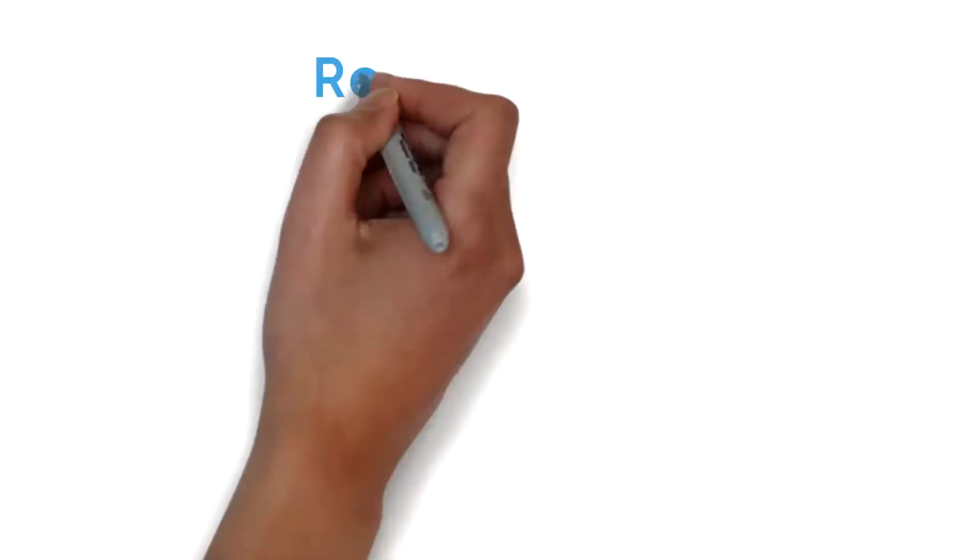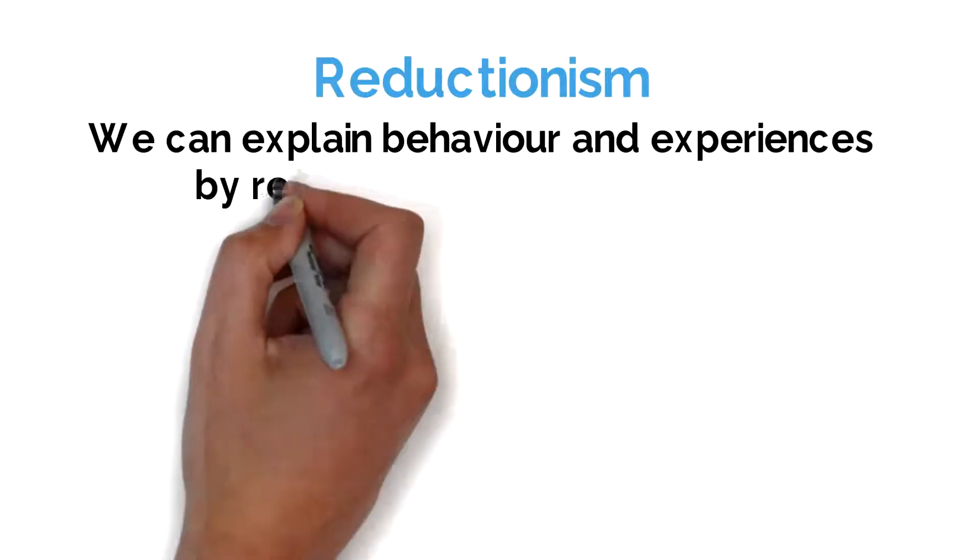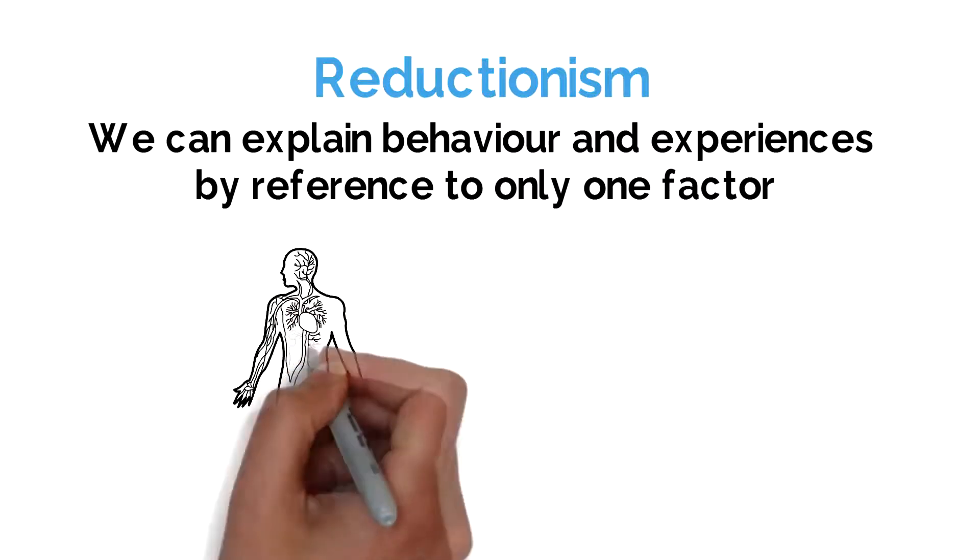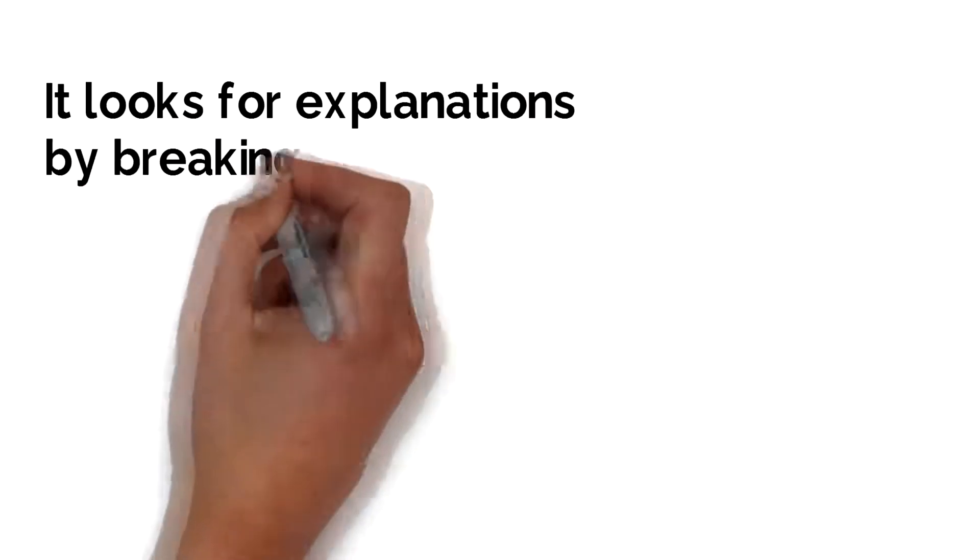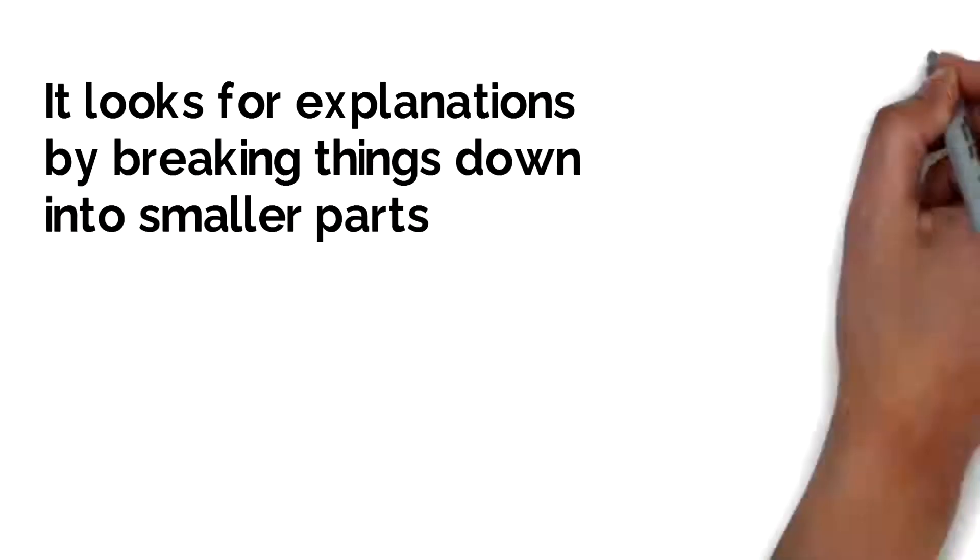Reductionism is the argument that we can explain behavior and experiences by referencing only one factor, such as physiology or learning. The reductionist view of the world looks for explanations which break things down into smaller constituent parts.